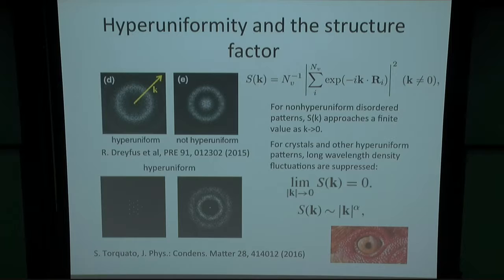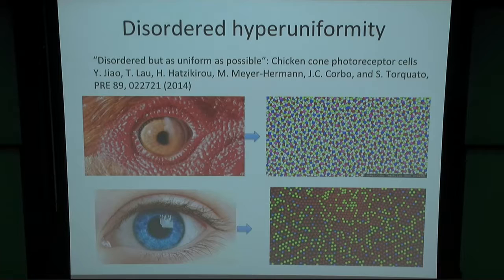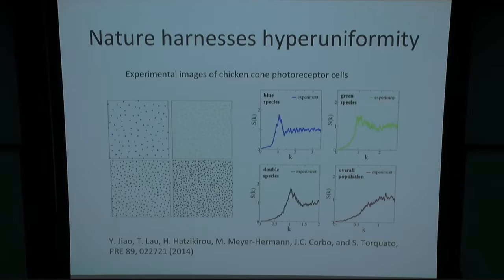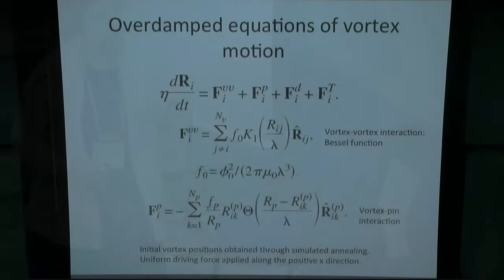One of the things that got people's attention with disordered hyperuniformity was actually the eyes of chickens. It was observed experimentally that if you look at the light-detecting cells in the chicken's eye and compare that to the light-receptor cells in your eye, it turns out the chicken eye cells are arranged in a hyperuniform pattern. If you look at the structure factor, it's going to zero as a power law at small k. Each type of color-detecting cell is hyperuniform, and the entire pattern is hyperuniform, which they call super hyperuniformity. So nature has actually been able to harness disordered hyperuniformity to help chickens see better. We wanted to ask: can we harness disordered hyperuniformity to increase the critical current for artificial pinning sites for vortices?